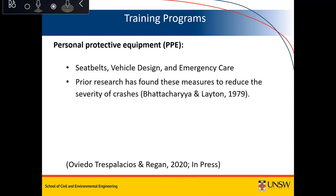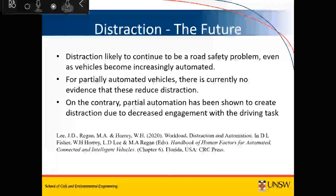The final category in the hierarchy of controls is personal protective equipment. In the context of distraction, this means that people who are distracted but have seatbelts, vehicles designed to protect them, and good emergency care after a crash are less likely to be seriously or fatally injured in a distraction-related crash. Research shows these protective mechanisms reduce the severity of crashes and the number of fatal crashes.